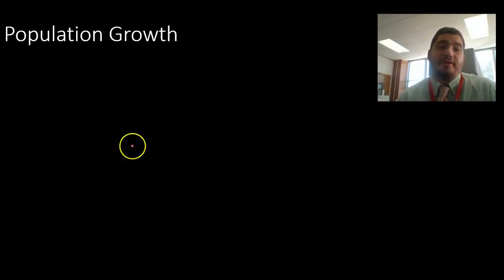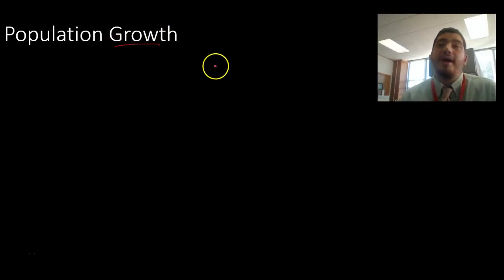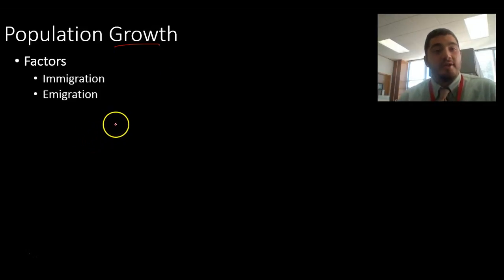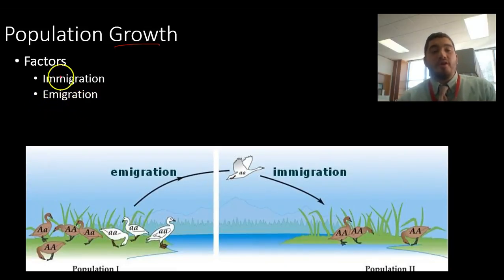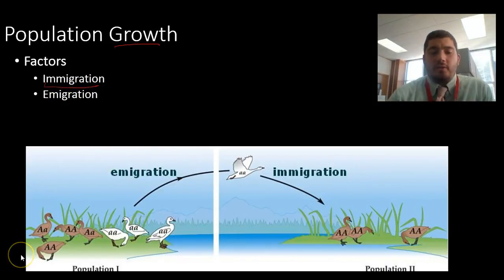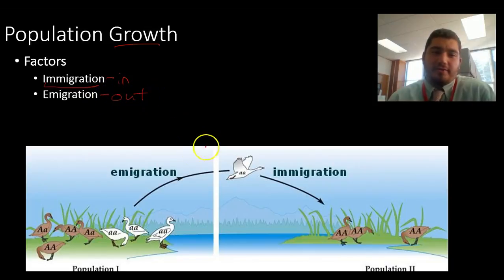The next part of population is population growth. Populations can grow and change over time, and there are four factors which have a really large effect. The first two are called immigration and emigration. Immigration is a word you've probably heard — it means when an organism is coming into a new place. Emigration is when an organism is leaving or going out of a place.